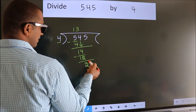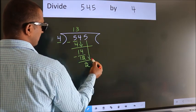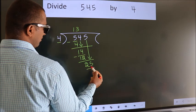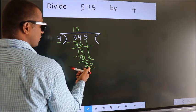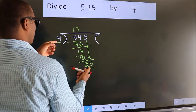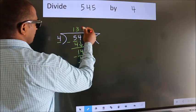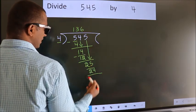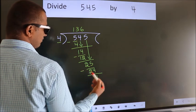After this, bring down the beside number. So, 5 down. So, 25. A number close to 25 in 4 table is 4 6 24. Now, we subtract. We get 1.